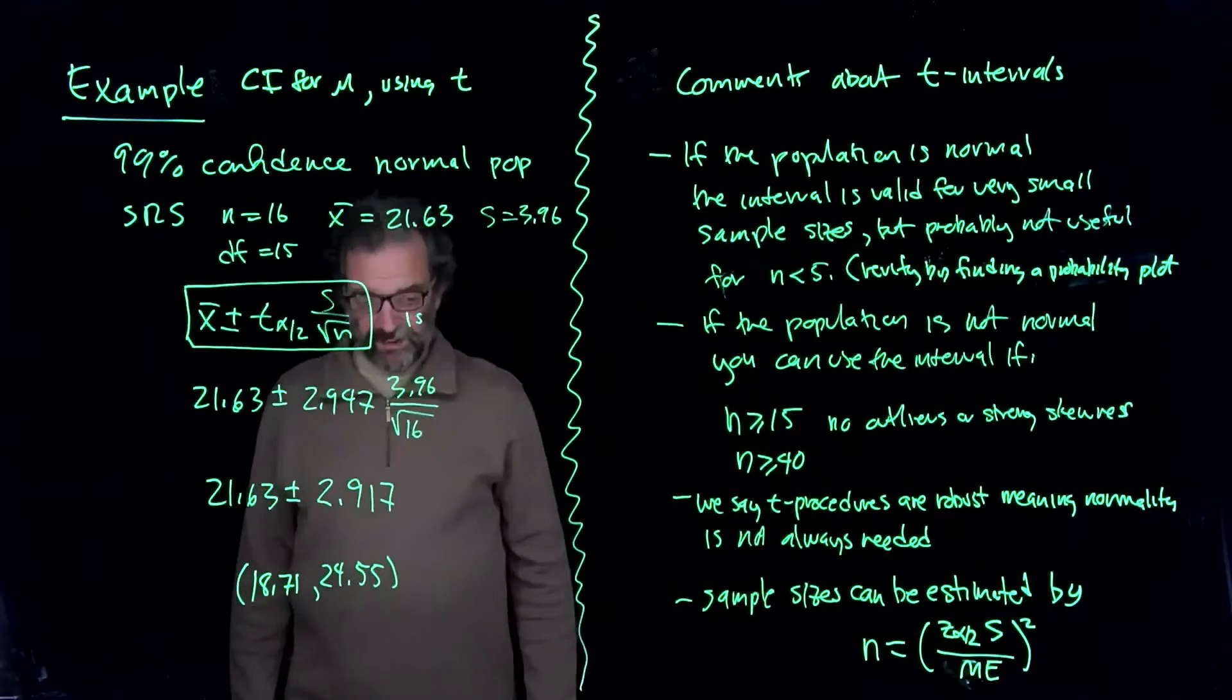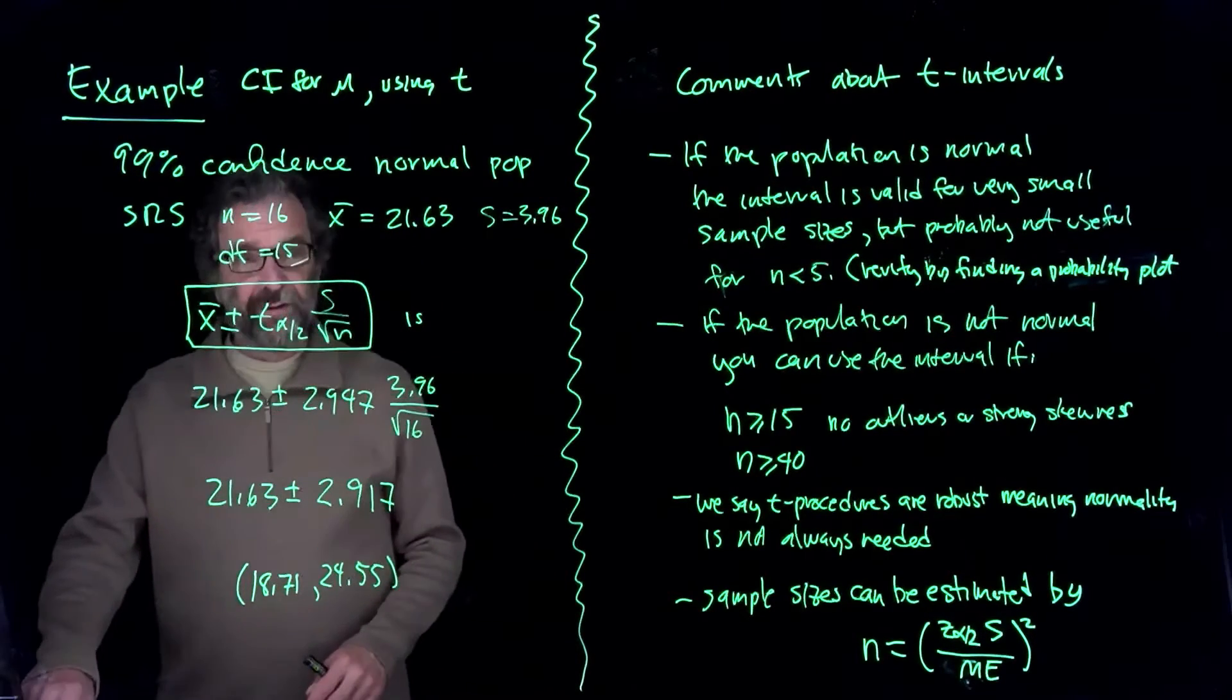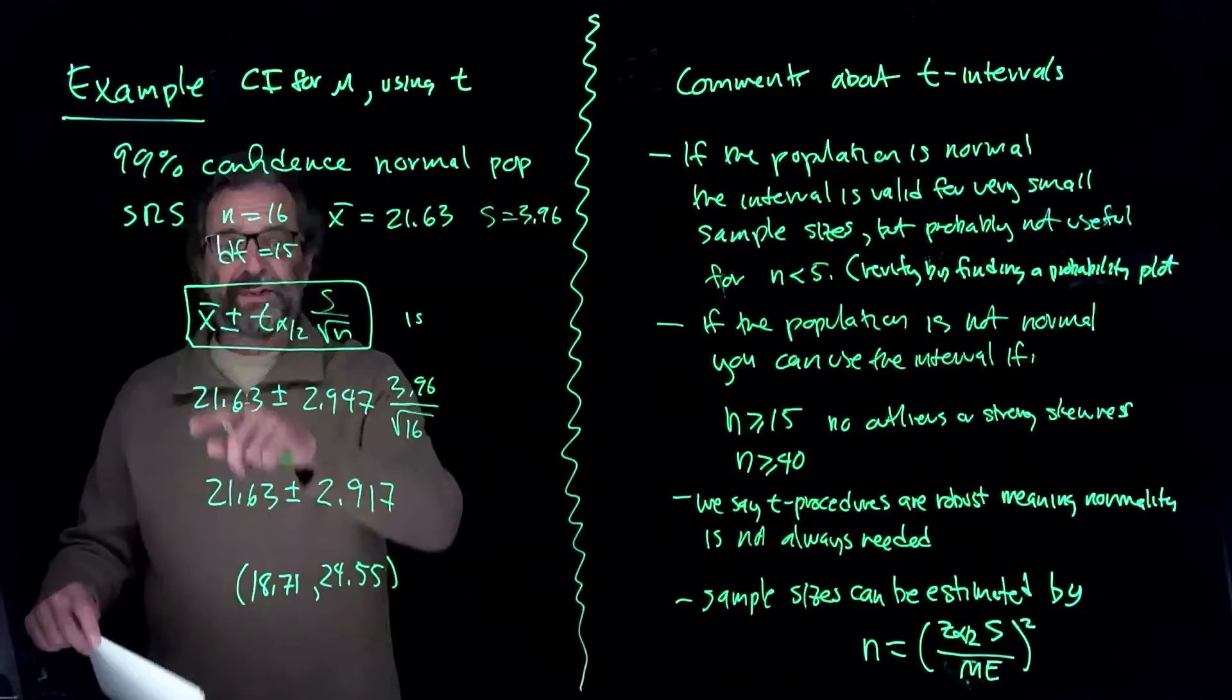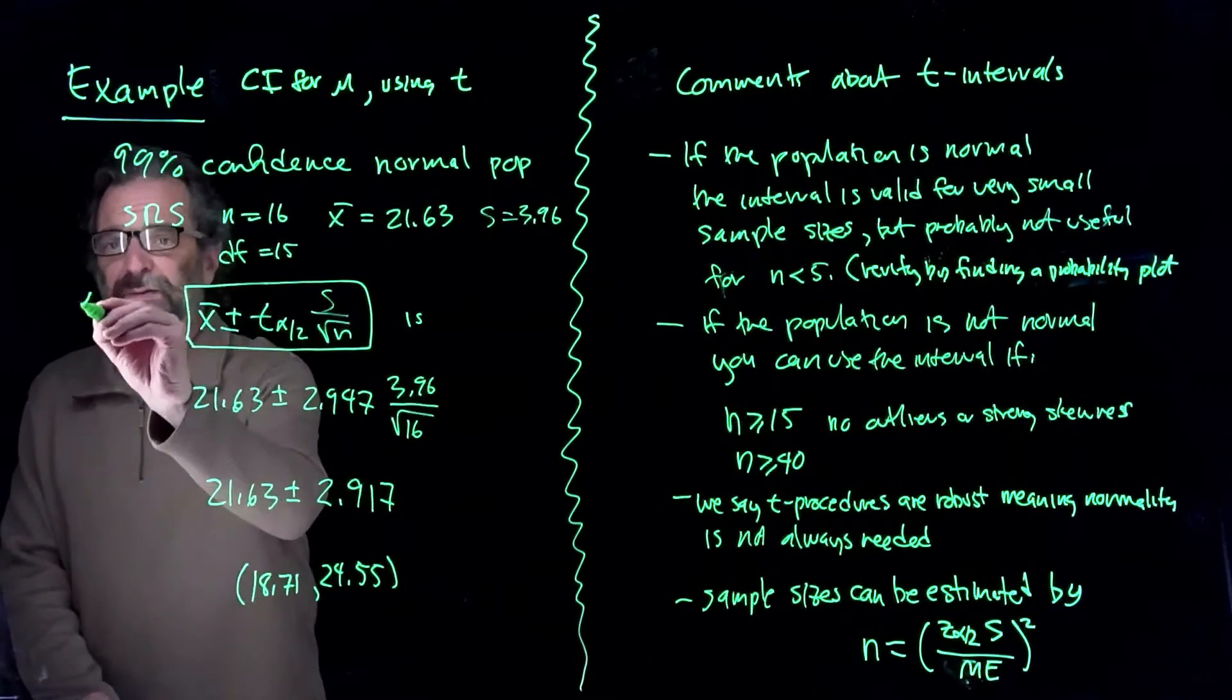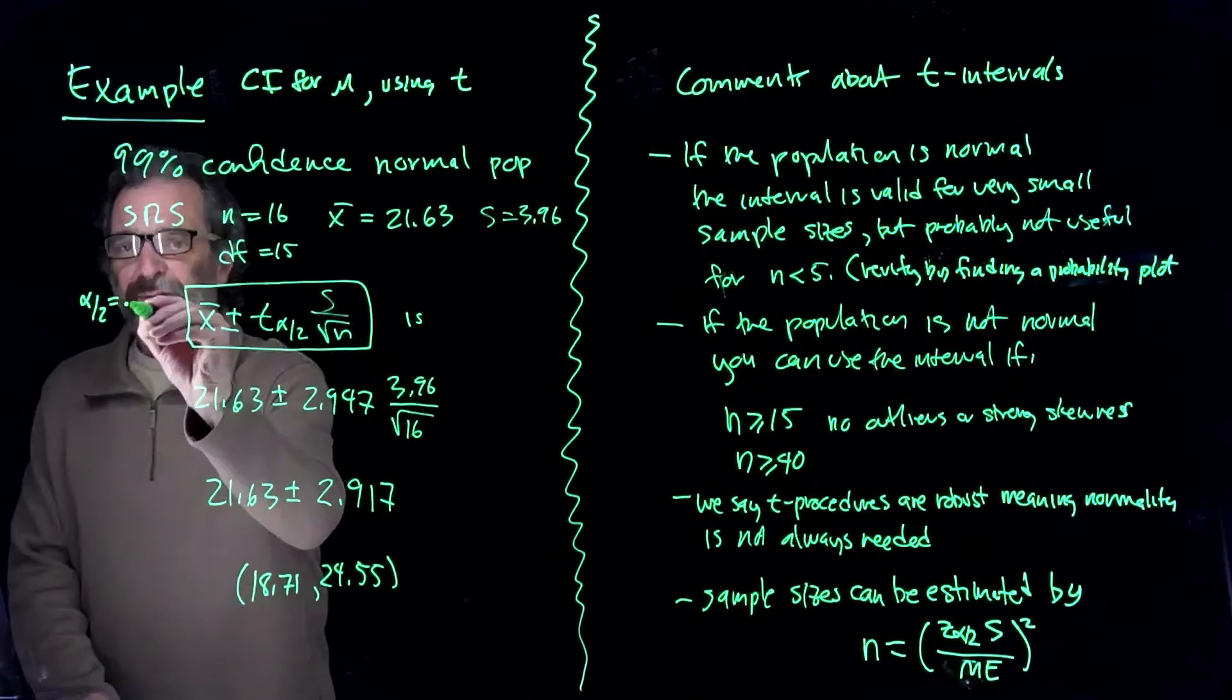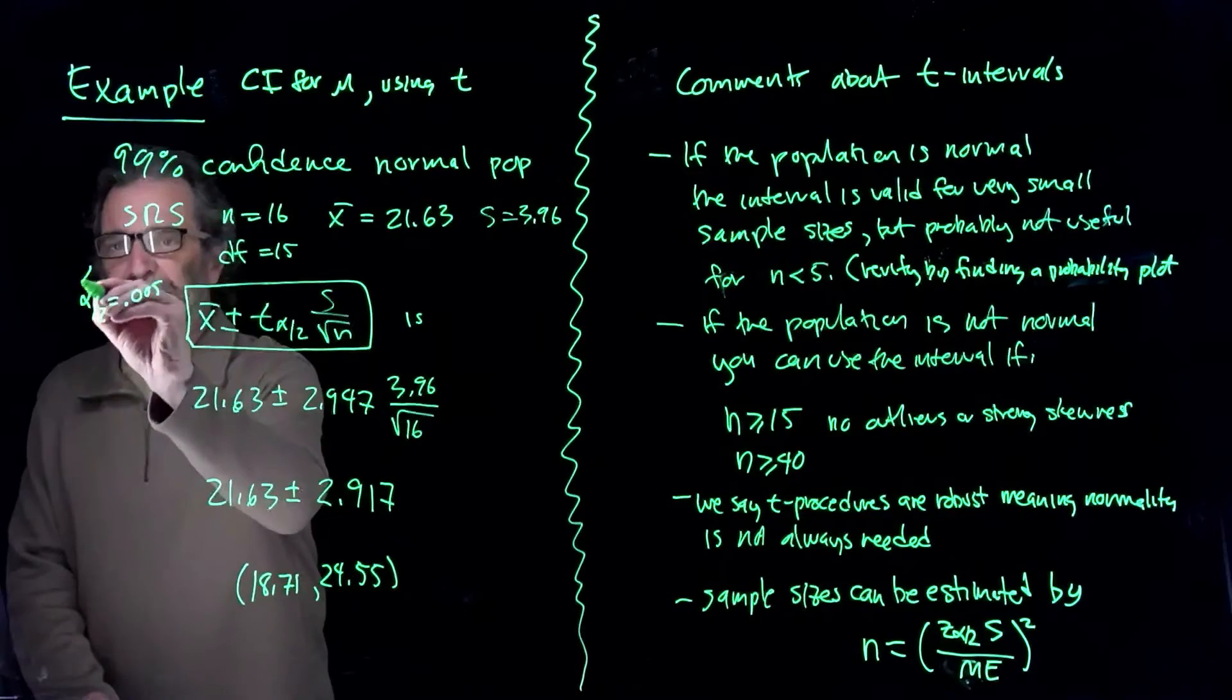So we need to find the T value. I've got T here. It's 99%, so alpha over 2 is 0.005. So alpha is 0.01.